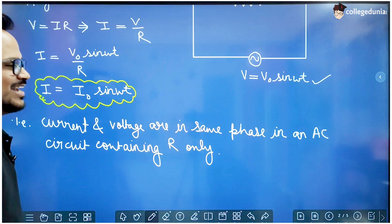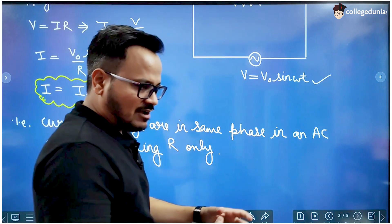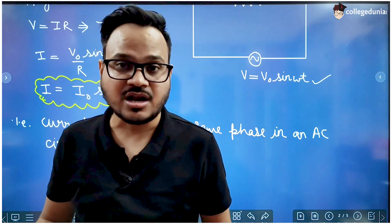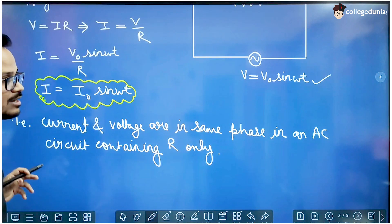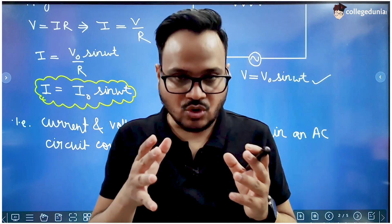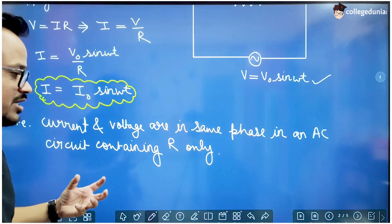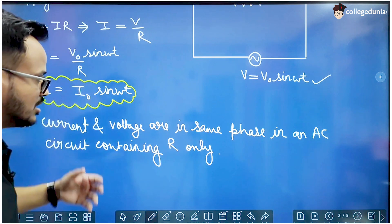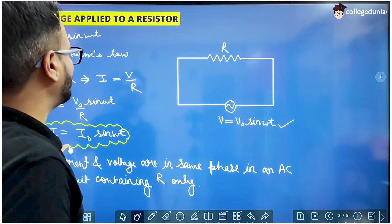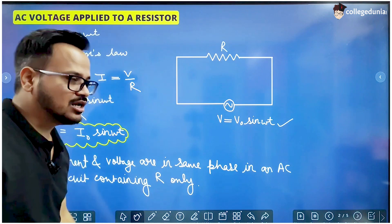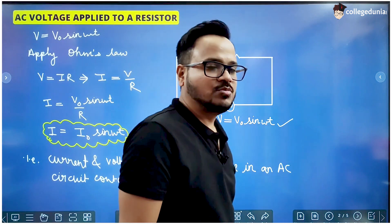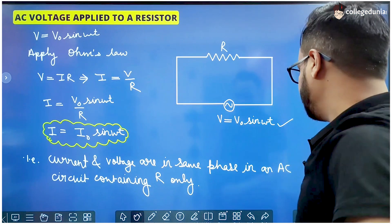We also have to draw the phasor diagram. We have studied phasors in the previous lecture — if you have not seen that lecture, you first have to see it and understand what a phasor is, only then will you be able to understand the diagram we are going to draw. So first go and watch that lecture. What we have seen is that current and voltage are in the same phase in an AC circuit containing pure resistance, with only resistance present in the circuit.